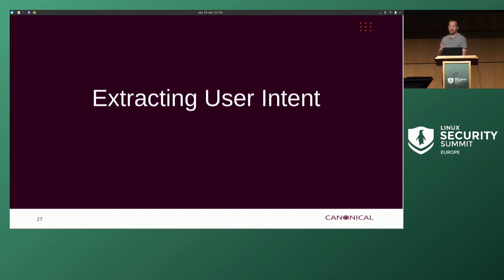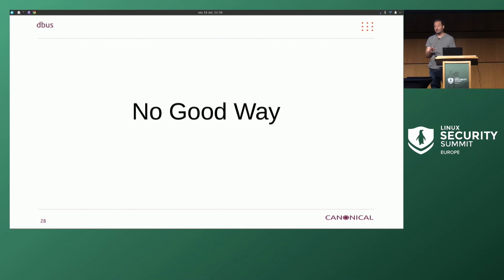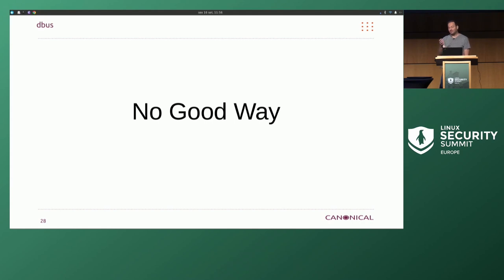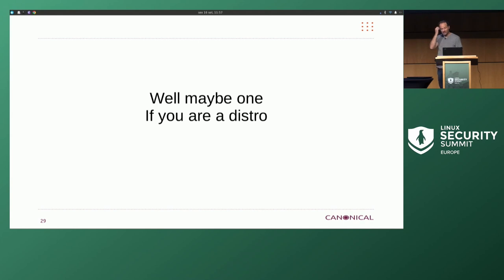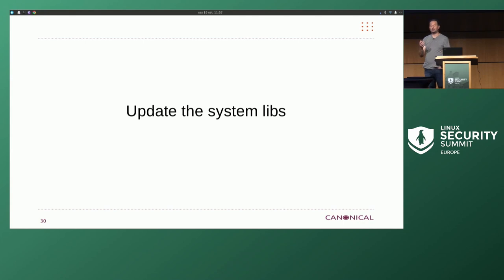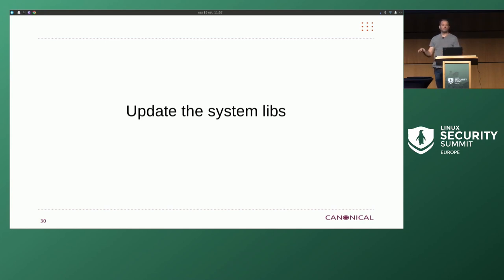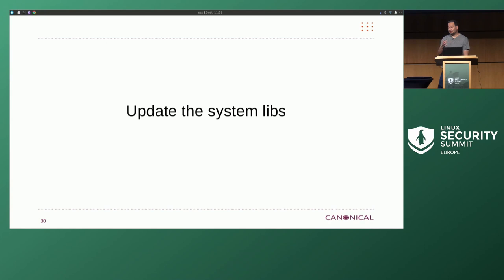So how are we going to go about extracting user intent? There's no good way, so we're going to go through a series of progressively nastier things we've experimented with. There is maybe one good way if you're a distro or building from scratch: update your system libs. You can have system libs that applications call and have them redirect to portals. GNOME has done this — if you're using basic GNOME APIs, you can get this automatically. Calling the picker will automatically go through the portal if it's there. Older GNOME libraries don't, but you can update them if you're a distro. That's the least nasty option.